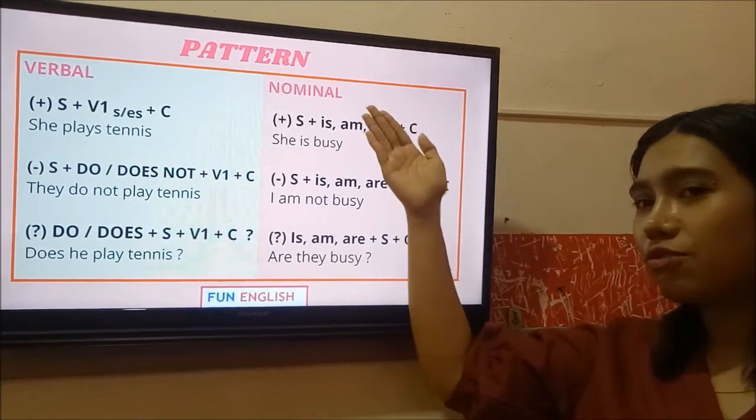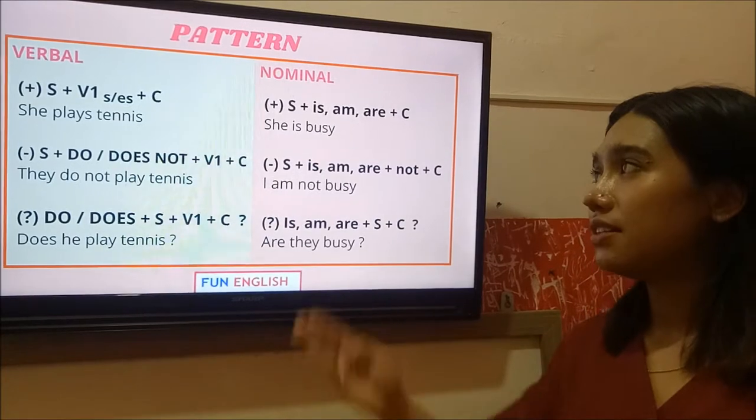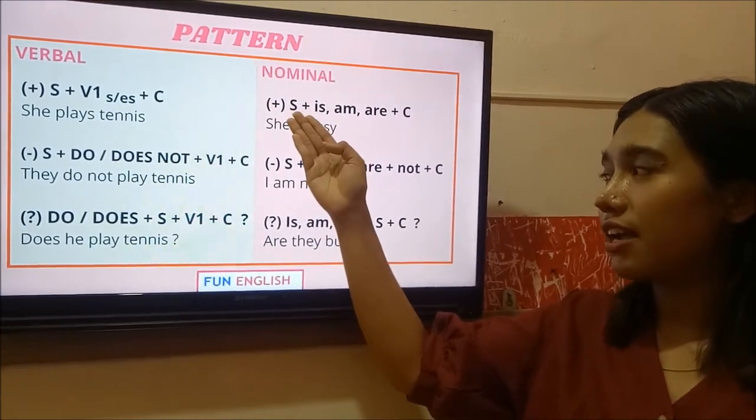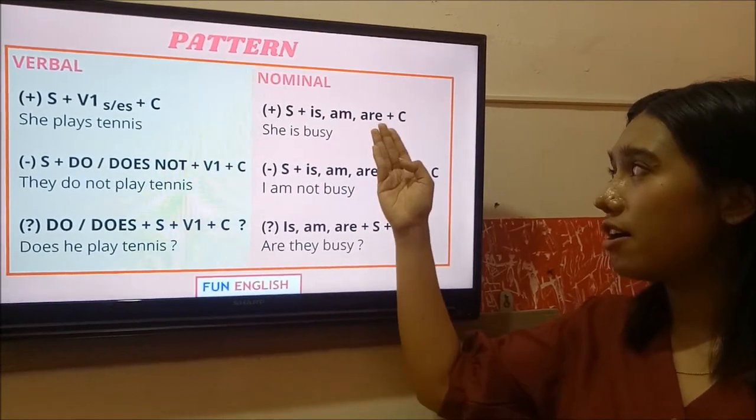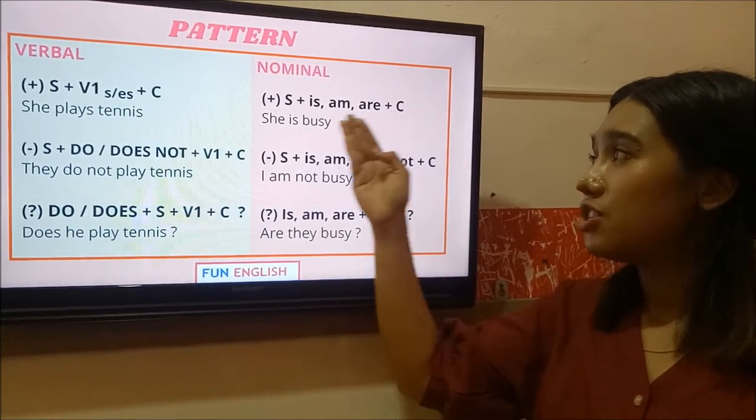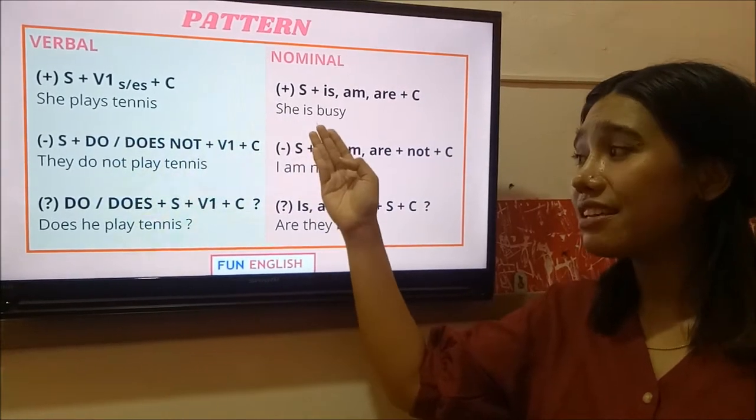Move into nominal. When you are going to make a sentence using nominal, in the positive, you have to include subject plus to be is, am, are, plus object or adjective as complement. She is busy. Man, why does she use is?